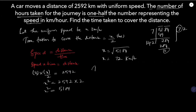But they are asking for time, not speed. Time is x/2, so 72 divided by 2 gives 36 hours. The answer for this problem is 36 hours. Speed is 72 km per hour.